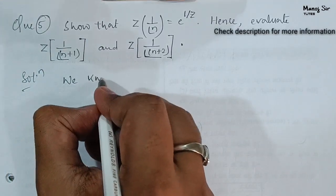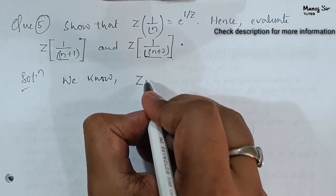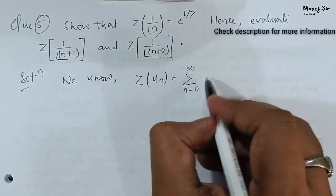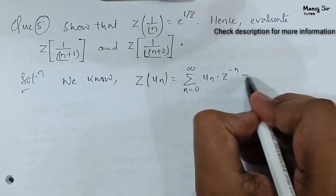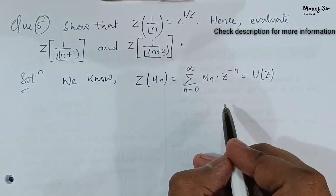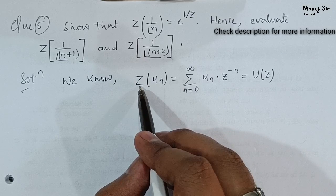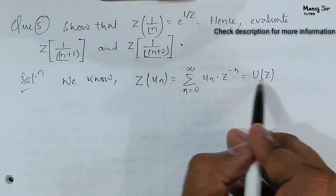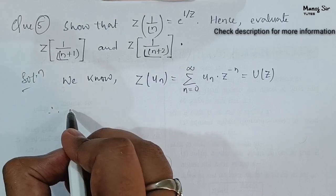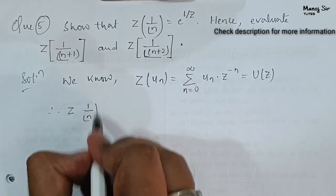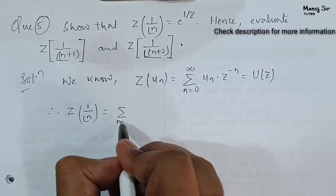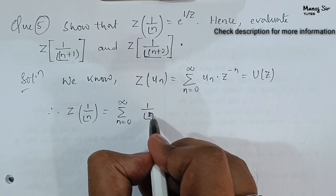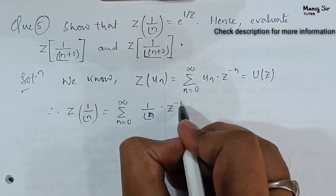We know by the definition of Z transform that Z transform of u(n) is equal to summation n equals 0 to infinity of u(n) into z to the power minus n, and that equals U(z). Therefore we can say Z transform of 1 upon factorial n is equal to summation n equals 0 to infinity of (1/n!) into z to the power minus n.